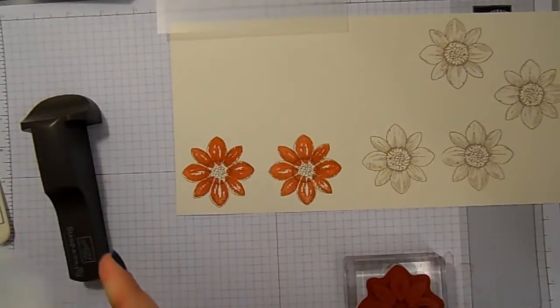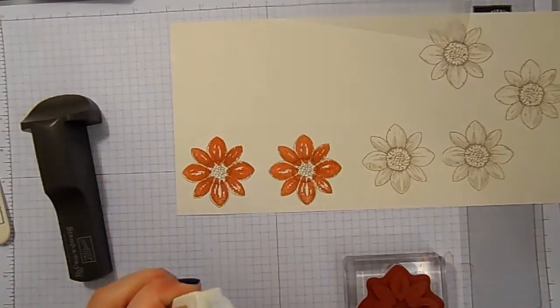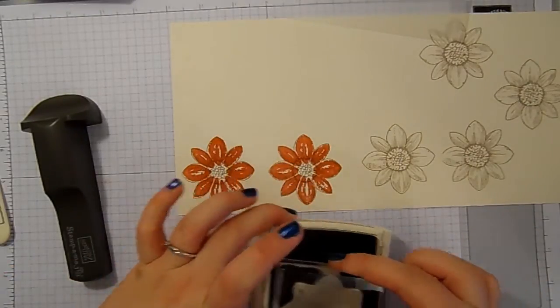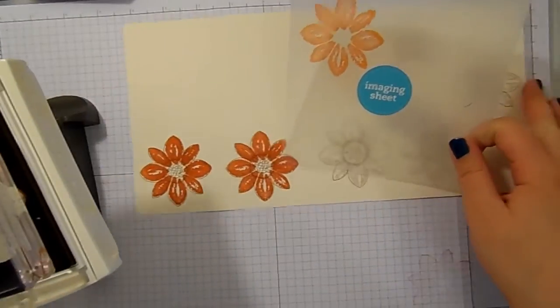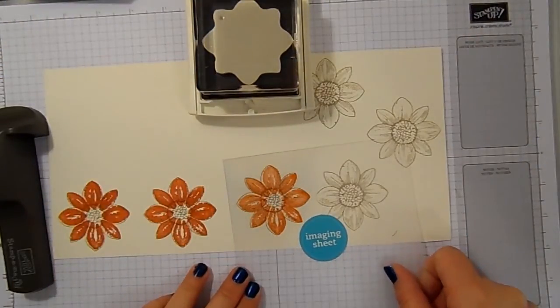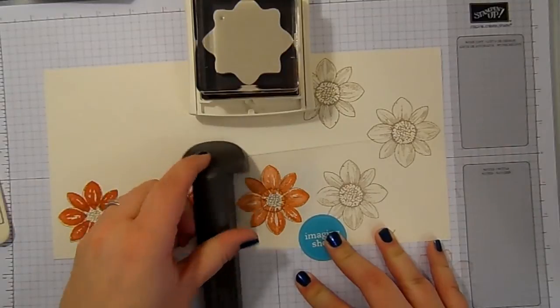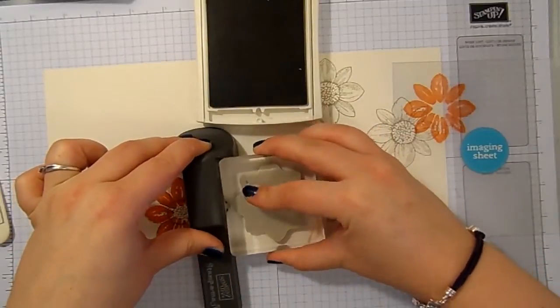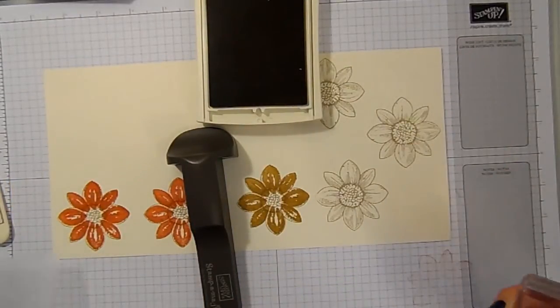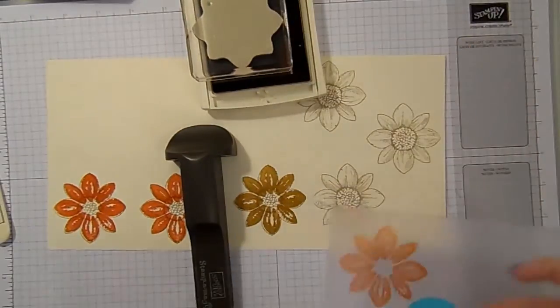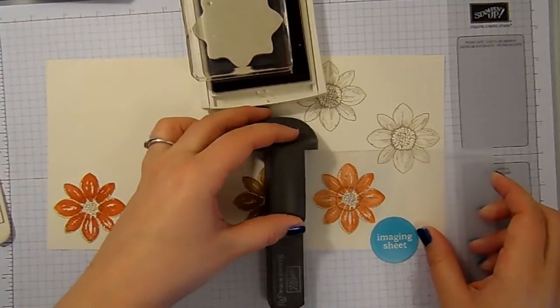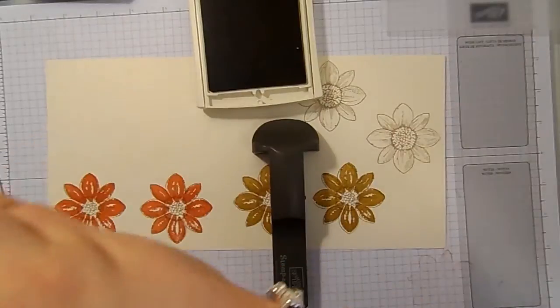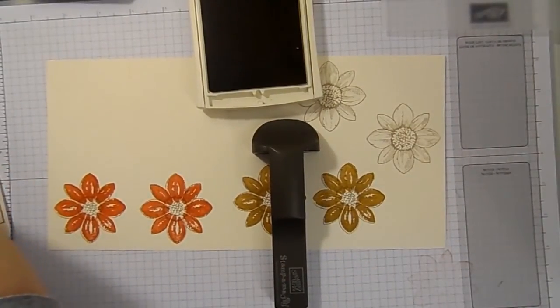I'm going to clean this off with my stamp scrub that's just over here. And move on to my next ink color which is Hello Honey. And I'll do this with all six flowers. So I'll bring my imaging sheet back in. It doesn't matter that it's Tangelo Twist because I'm only using it as a guide. Line it up, put the handle in, move the imaging sheet, and clean my stamp again.